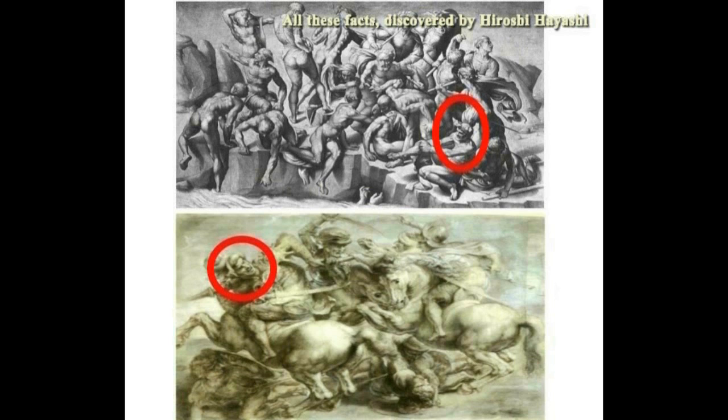この赤い丸で囲んだ二人の人物を比べてみてください。同じです。つまり、アンギャリの戦いの絵の中に描かれている左二人の人物と、上のカッシナの戦いの中に描かれている右下の人物は、同じ人物だということです。